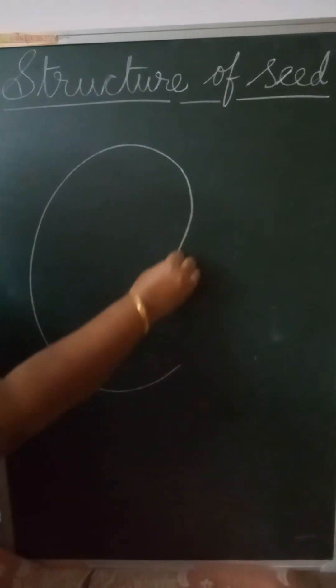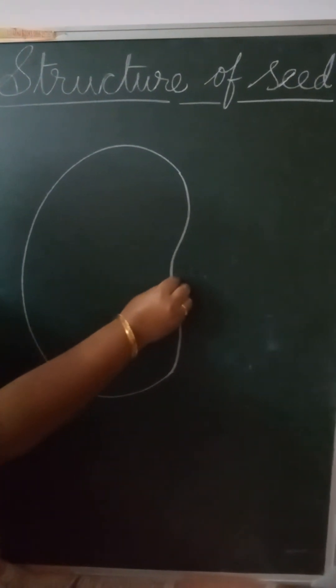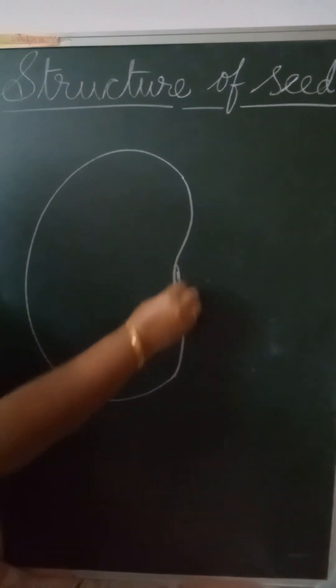Join these two like this because we are drawing the structure of a bean seed and it is having a hilum in the middle. This is a hilum.